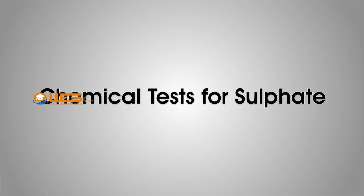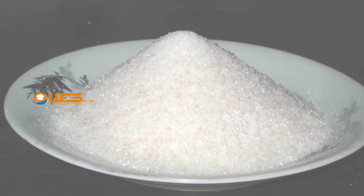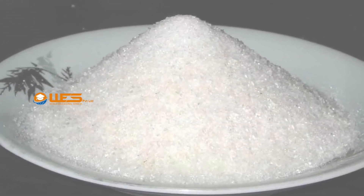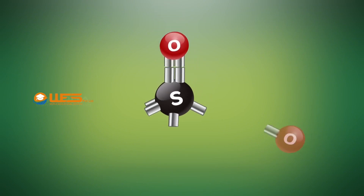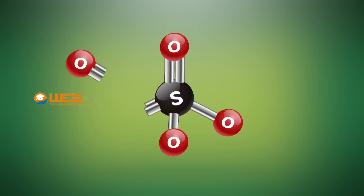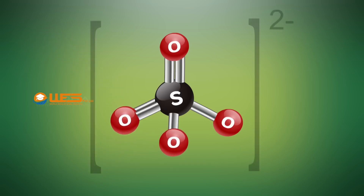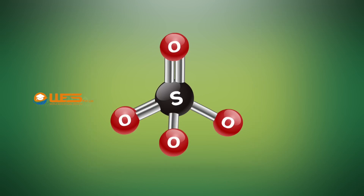Chemical Tests for Sulphate. Sulphates are inorganic salts containing sulphate ions. The sulphate ion is a polyatomic anion in which the central sulphur atom is surrounded by four equivalent oxygen atoms in a tetrahedral arrangement. In the sulphate ion, the sulphur atom is in the plus 6 oxidation state while the four oxygen atoms are in the minus 2 states.